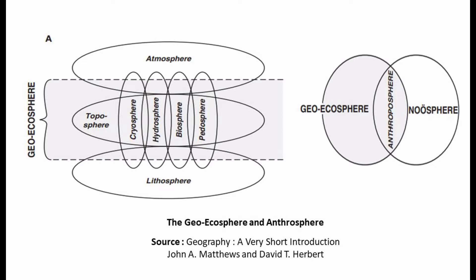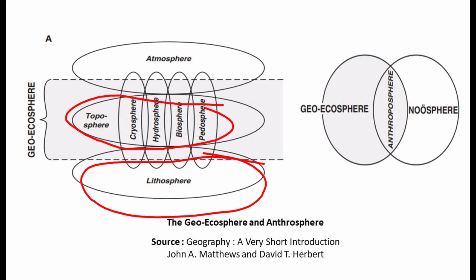Starting from the upper part, the Geoecosphere diagram has three main spheres: the atmosphere, the toposphere, and the lithosphere — these are the major study areas of physical geography. The toposphere is the study of Earth's land surface, focused on in geomorphology. The lithosphere covers the upper part and internal geological structure of the Earth. The atmosphere is the blanket of air around the Earth, and is the main focus of climatology.